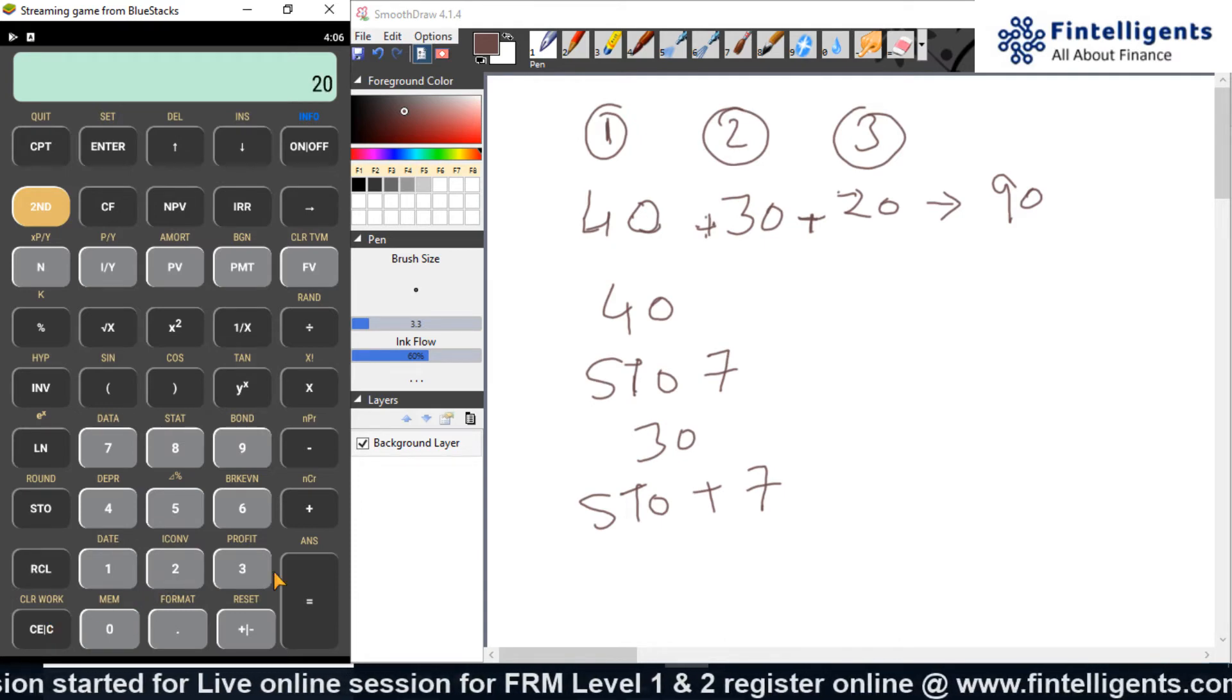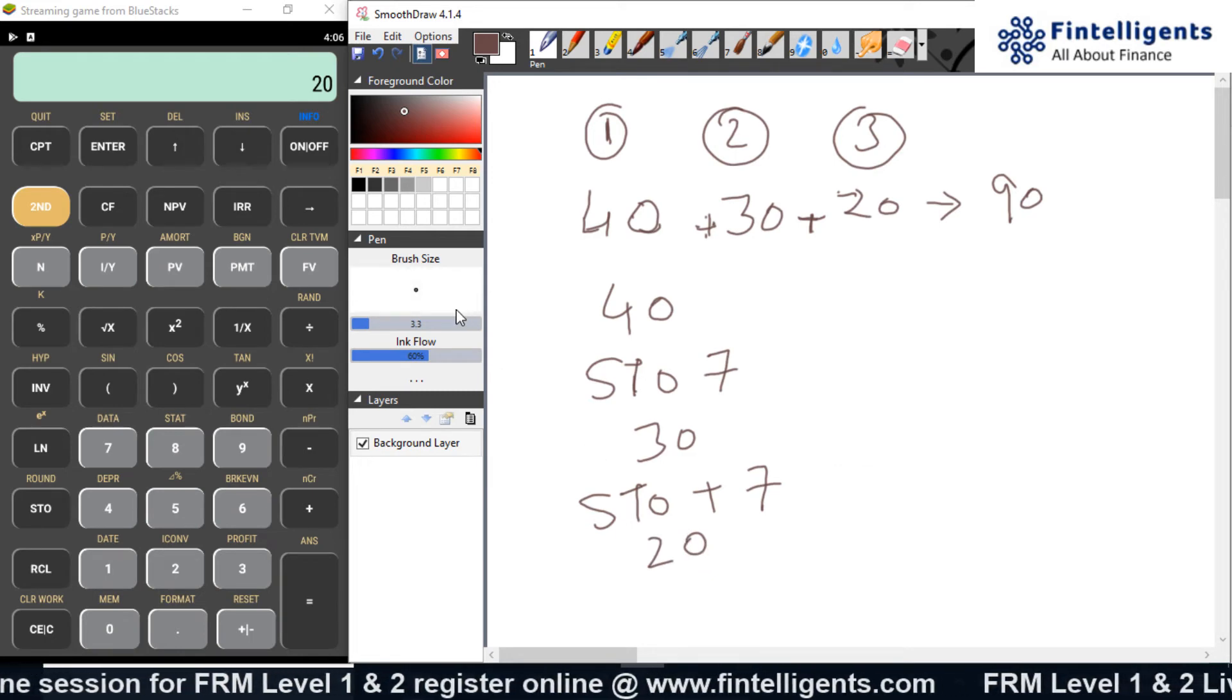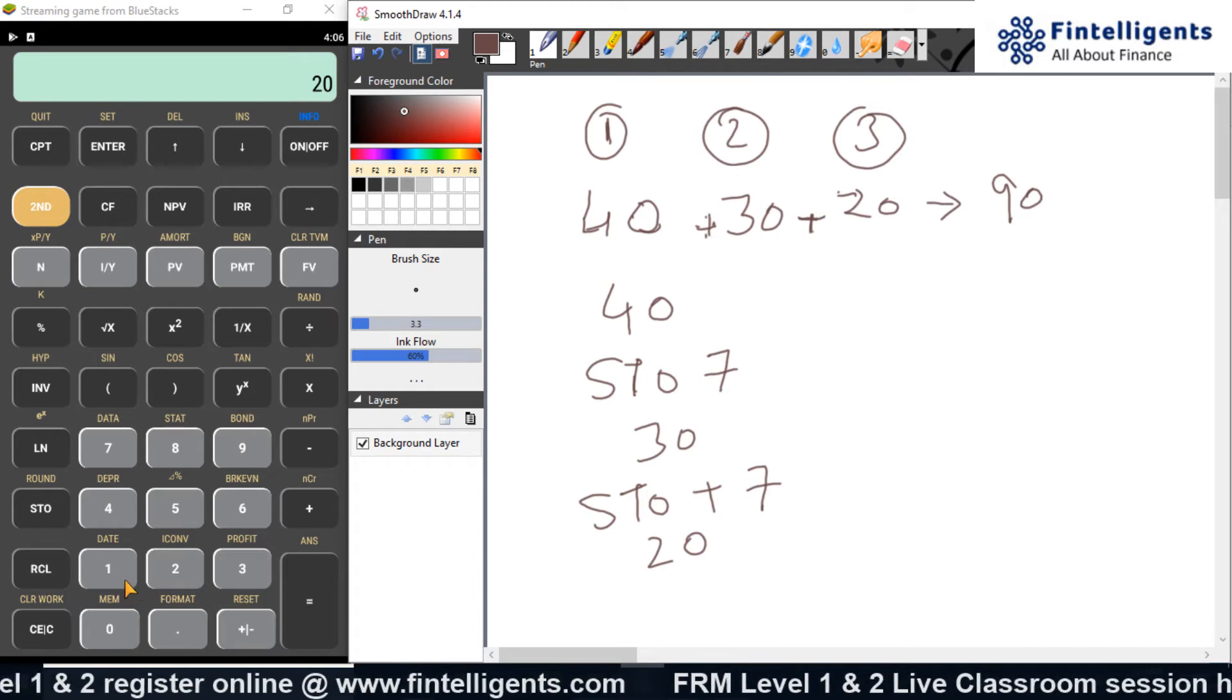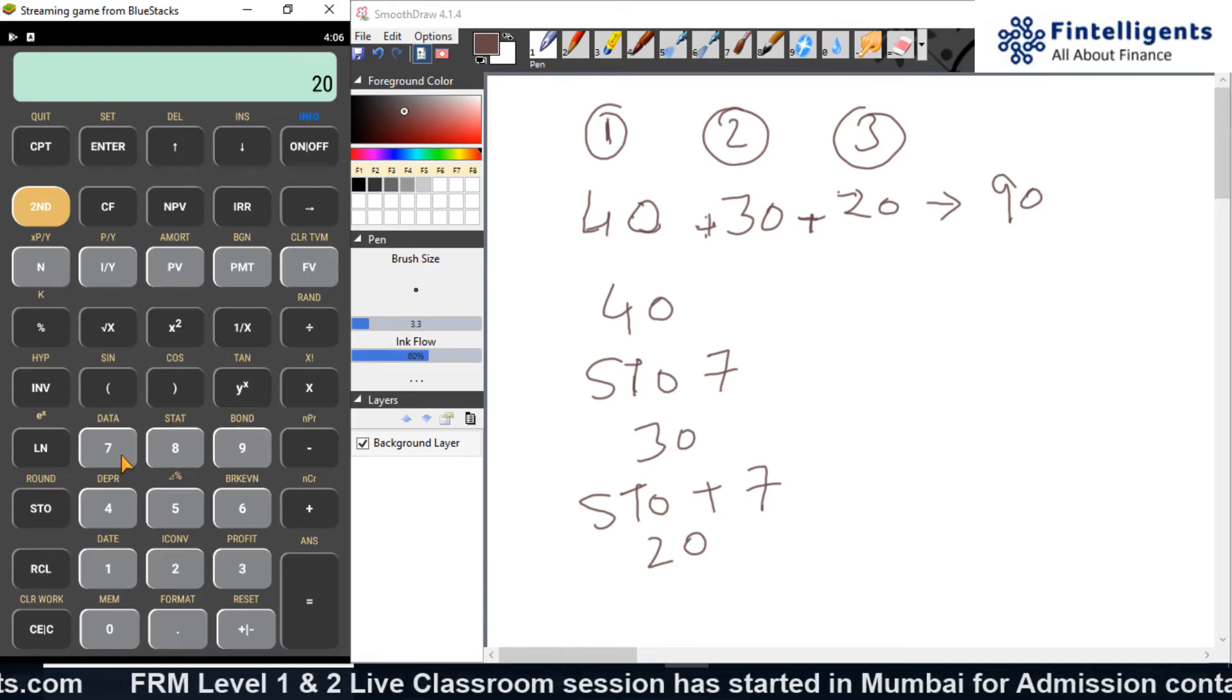Suppose I go and do the third calculation. And I want to store that third calculation to the value which is already stored in over here in 7. So, how do I do it? I have 20 on my screen. You can see that.